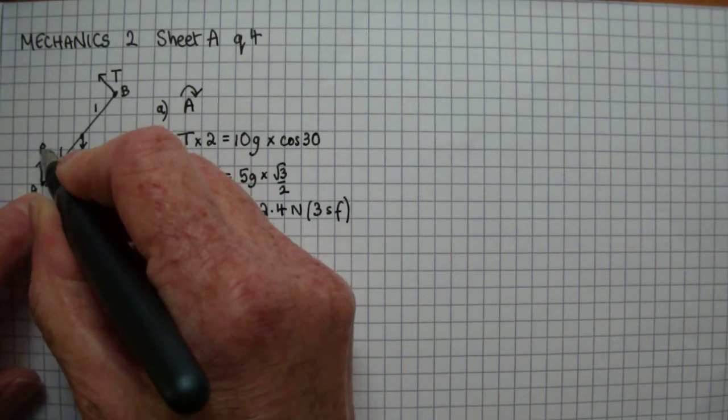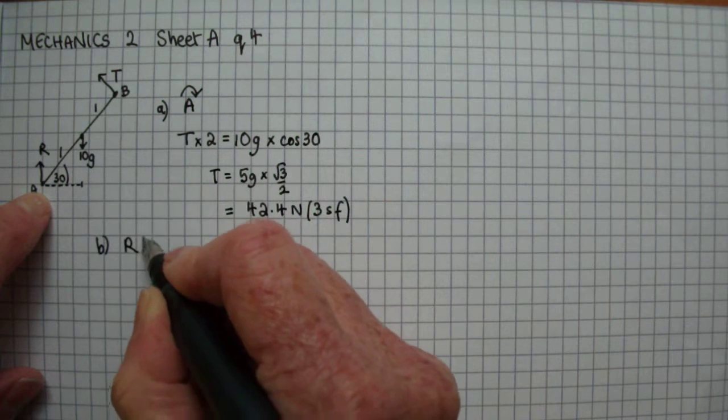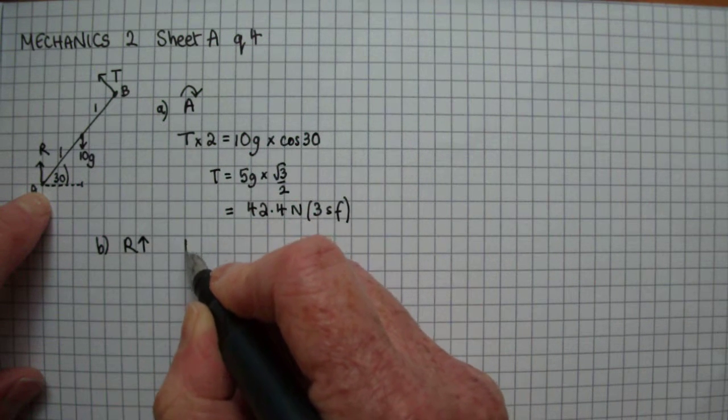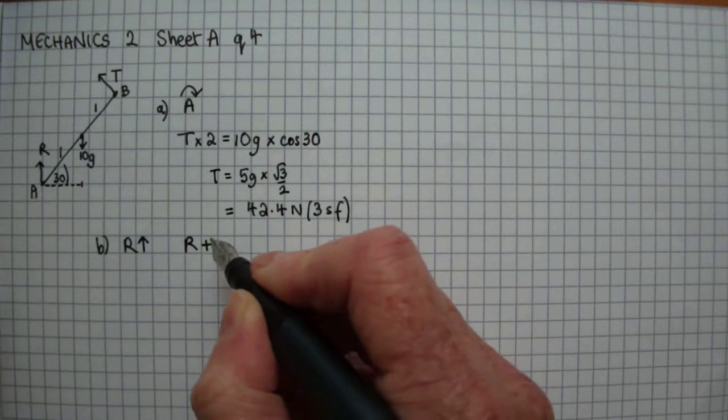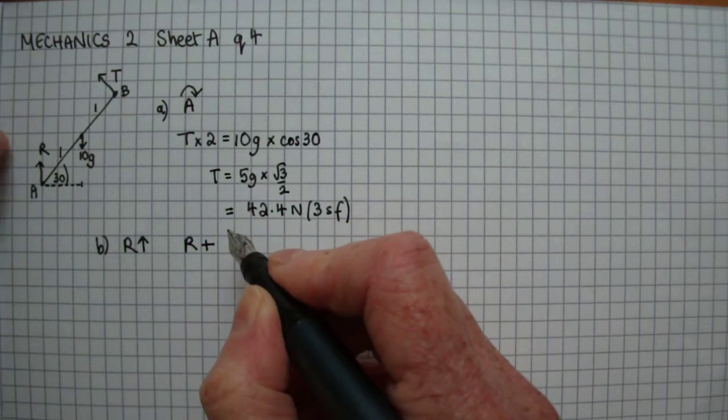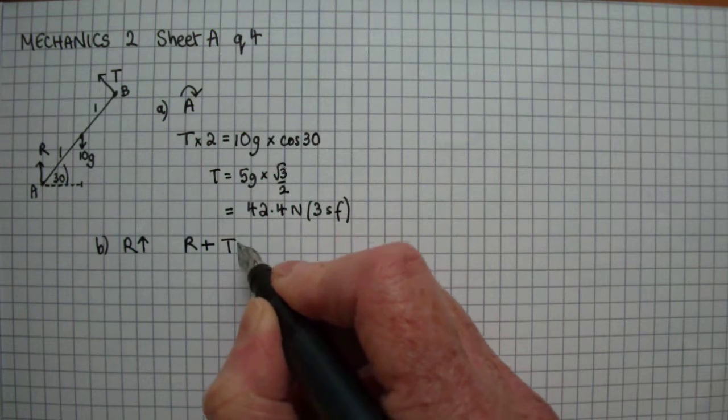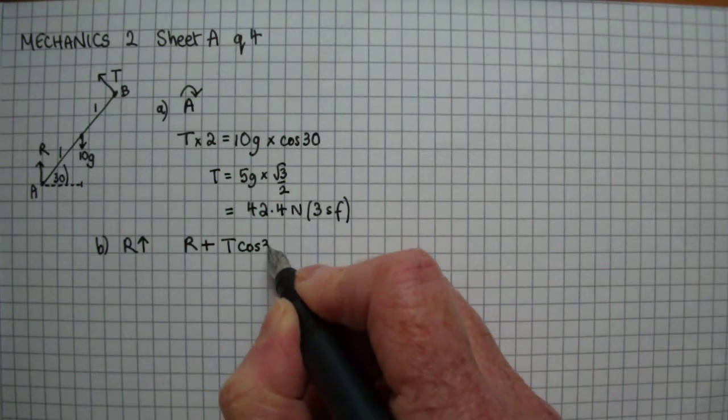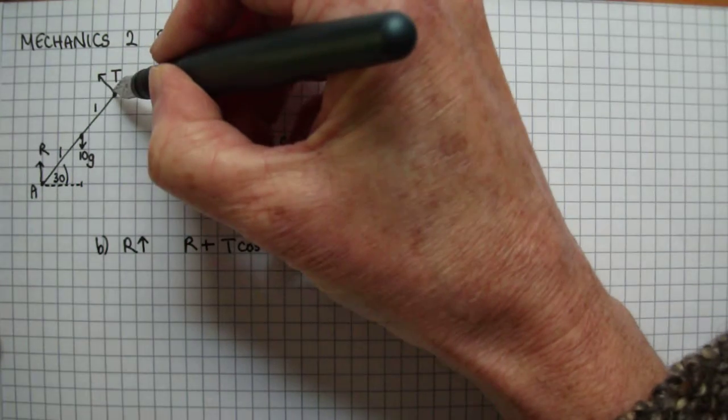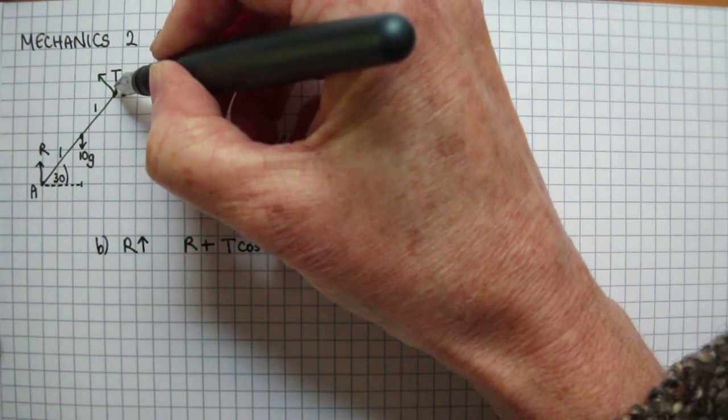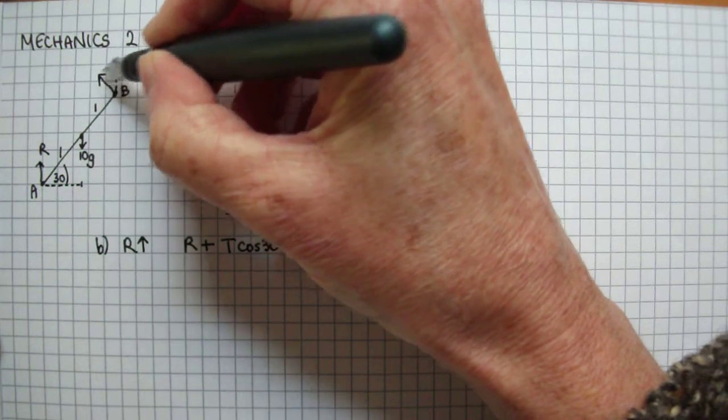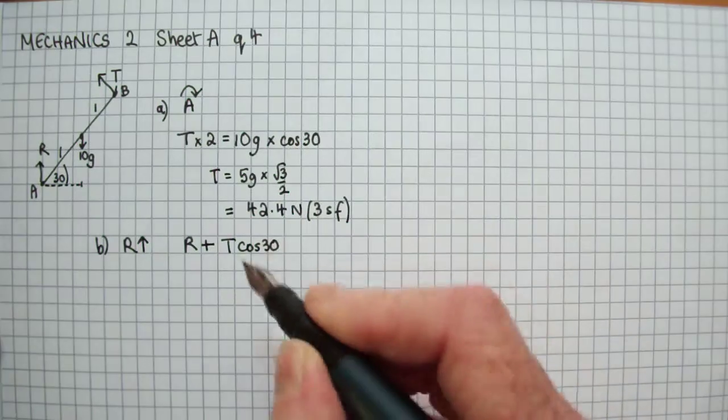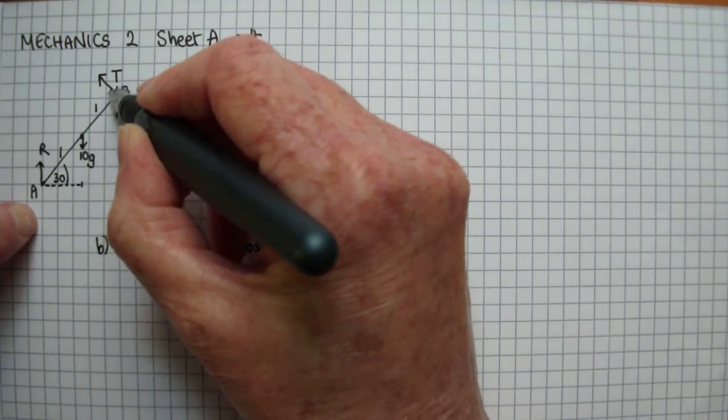So R plus the vertical force at T, which is T cos 30. Just to show that this angle that T makes with the vertical is 30 degrees, because this is a right angle and that's 60 degrees there.